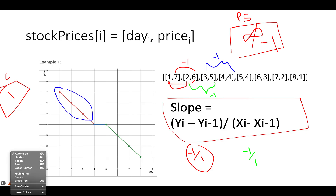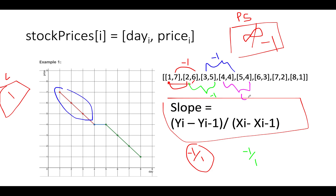Now calculating the slope for the next pair: (4 - 4) = 0, and (5 - 4) = 1, so slope = 0/1 = 0. This is not equal to the previous slope of -1, so we increment the count to two — a new line is needed. This means these three points do not lie on the previous line. We update the previous slope to 0 and continue.